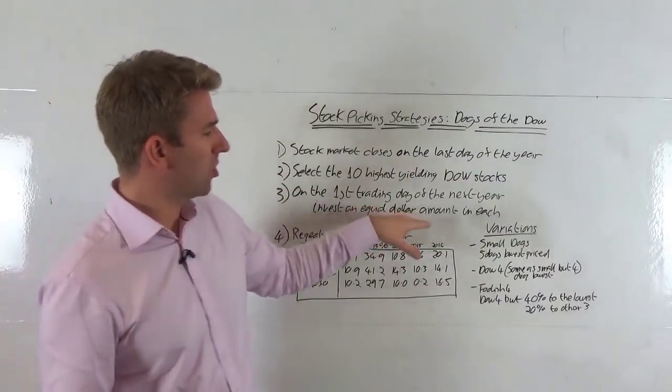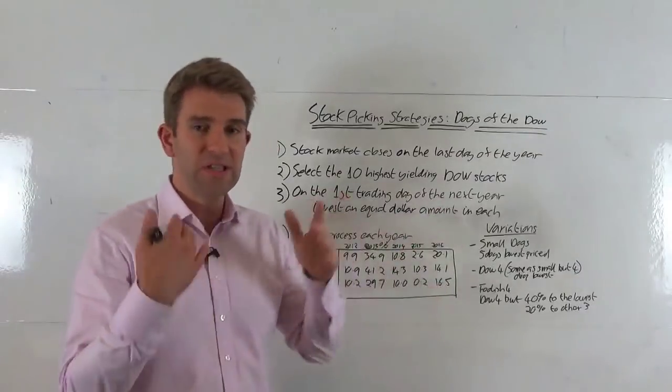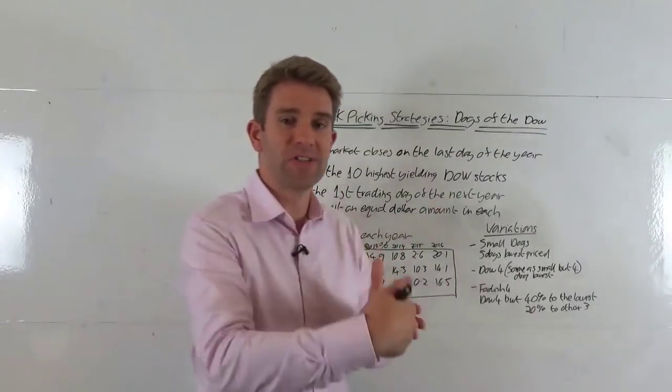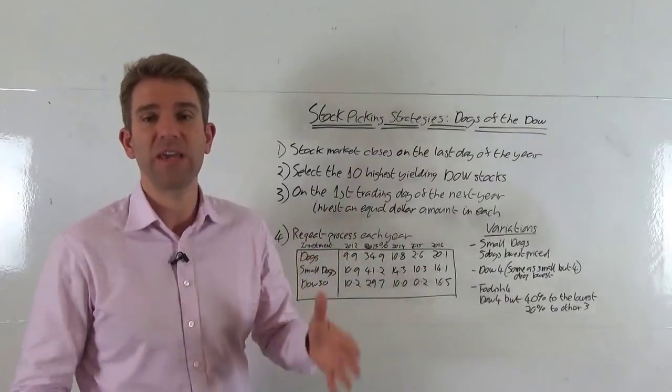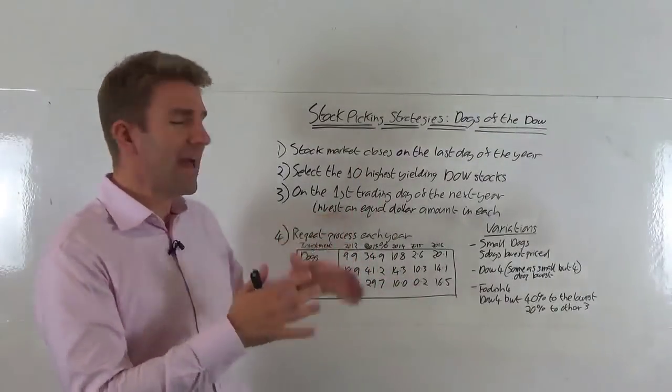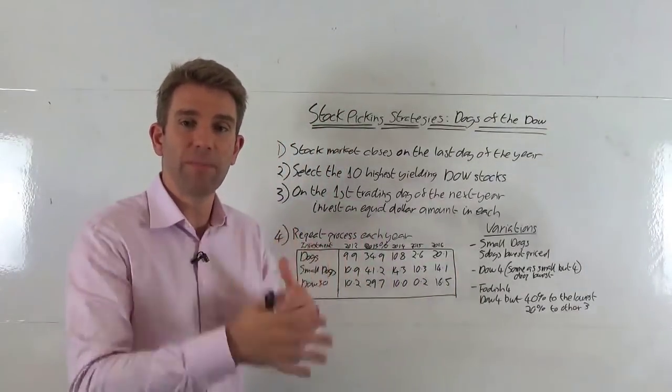We invest an equal dollar amount into each. We've got 10 stocks, we've discarded the 20, the 10 highest paying dividend yields. We put a tenth of the allocated portfolio capital. So got 100 grand, putting 10 grand to each, very simple. And then at the end of the year we repeat that process. At the end of the year, we rebalance.